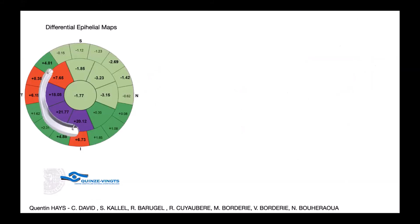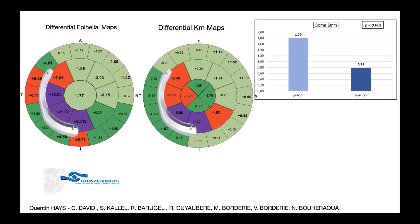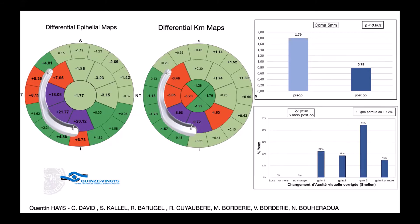This is another study of another asymmetric intracorneal ring segment. The conclusion was that we reduced coma and achieved better visual acuity. This study concerned 27 eyes.